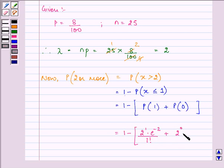Plus 2 raised to the power 0 into e raised to the power minus 2 upon 0 factorial.